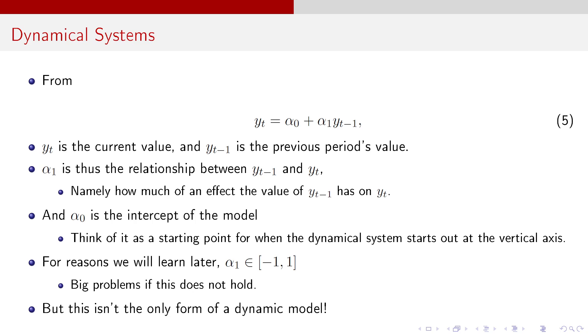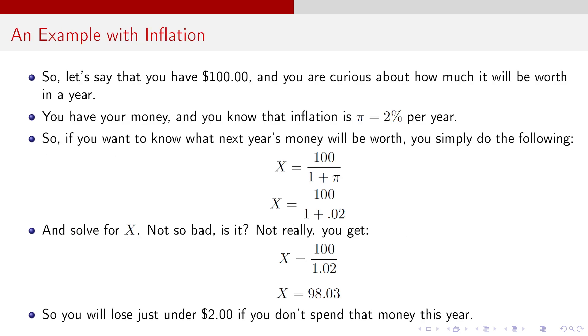Now, for reasons that we're going to be learning a little bit later, alpha one has to be between negative one and one. Now, it's inclusive here. It actually should be not inclusive. Big problems if that doesn't hold. But the thing is, this isn't the only form of a dynamic model. There's other ways to model it. This is just like a nice linear in parameters approach.